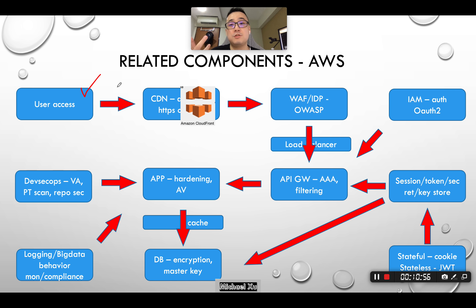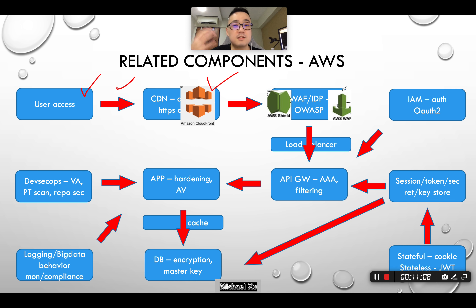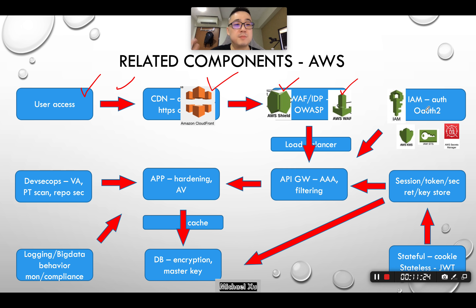The user request still follows HTTPS with TLS 1.2 or TLS 1.3. For the CDN, you have the option to use AWS CloudFront. For WAF and DDoS protection, you can use AWS Shield and AWS WAF, which provide anti-DDoS, anti-virus, and anti-malware protection. From the IAM perspective, you use AWS IAM. You also have key management, token management, and secret management services, so instead of running your own key server, you leverage the cloud-native AWS services.